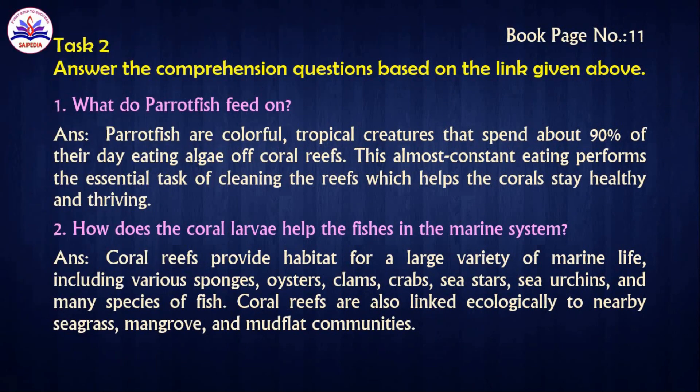In the task, the first one is Task 1. You will need to listen to the content given in the below link, and familiarize yourself with the different types of listening, to strengthen and improve your ability of listening. You will get a link; the content is available there. You will listen to the content, which is based on the next task. Page number 11 — answer the comprehension questions based on the link given above.